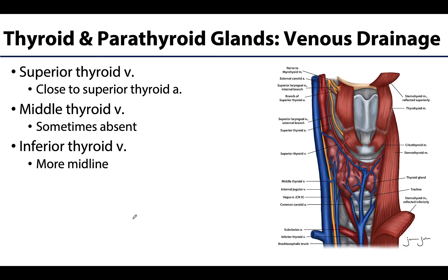There are typically three sets of veins that drain these glands. The superior thyroid vein will run close to the superior thyroid artery. The middle thyroid vein is more in the middle, but it's important to note that it may or may not be present — there is a lot of variability with the middle thyroid vein. The inferior thyroid veins are typically the largest; they are somewhat independent and are often seen more in the midline region, running superficial to the trachea.